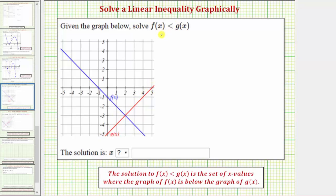To solve this graphically, the solution to f(x) < g(x) is the set of x values where the graph of f(x) is below the graph of g(x).